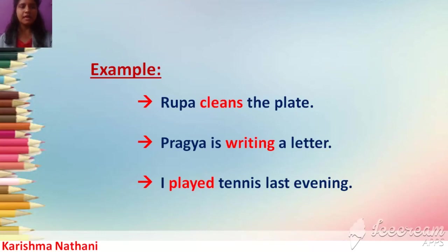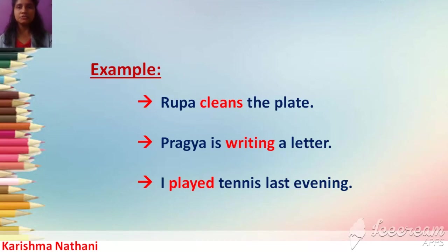'Pragya is writing a letter.' It is present continuous tense. 'Is' is a helping verb. 'Writing' is the -ing form of the verb 'write', so it shows present continuous tense.